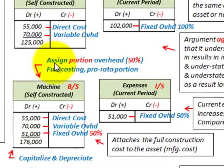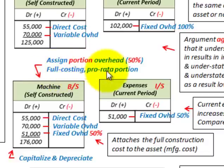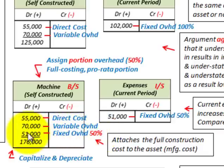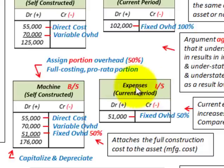Now let's look at the case where you assign a portion of the overhead — in this case, estimated at 50% of total overhead, which is typically considered full costing or a pro-rata portion. Our machine cost again includes direct costs of $55,000, variable amount of $70,000, and now we assign fixed overhead at 50%, or $51,000 — that's half of the $102,000 total. So our total machine cost is $176,000, and the expenses for the period at fixed overhead would be $51,000.